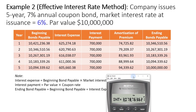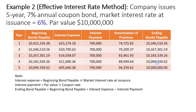For a premium bond, the initial value is at a premium to par. The interest expense will be less than the interest payment, and the ending bond payable will slowly decline until it approaches the par value at expiration.